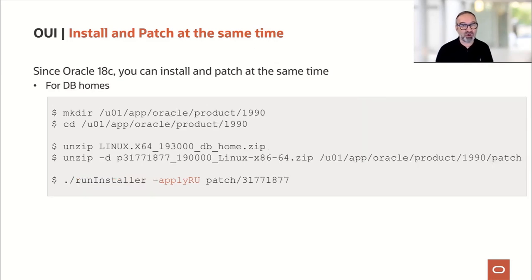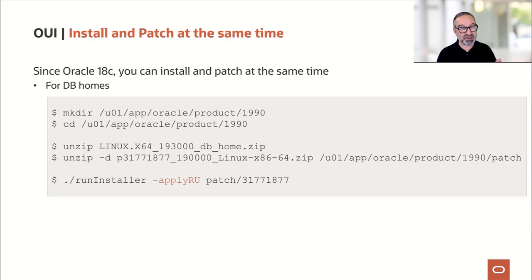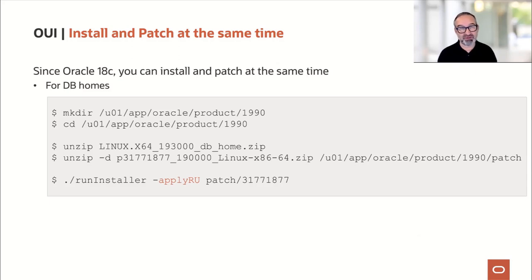The same thing, of course, works with the database as well, and here you may use this way more often. I create a directory at /u01/app/oracle/product/19.0, change into that directory, unzip the base release 19.3.0, and then unzip also the most recent release update into that directory. I start the installer with -applyRU and pass the directory where I unzipped the patch.